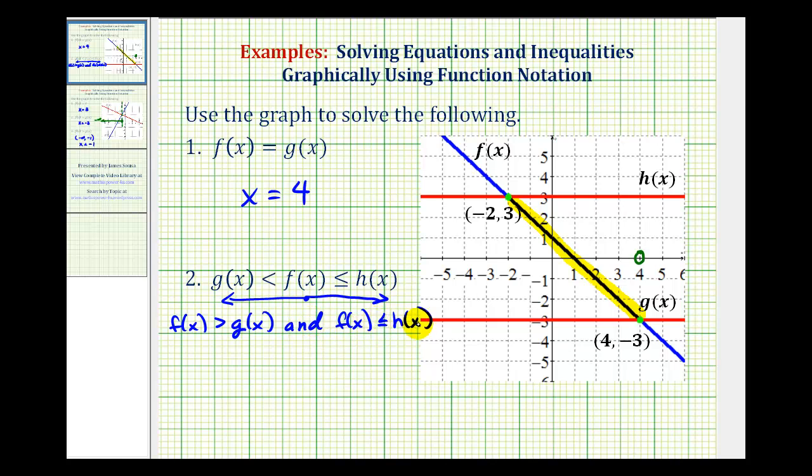And then for f of x less than or equal to h of x, because f of x can equal h of x, we would include the endpoint of x equals negative two. So, this is a closed point here.